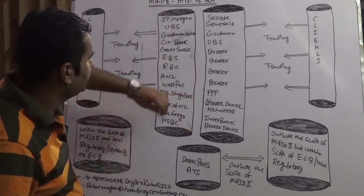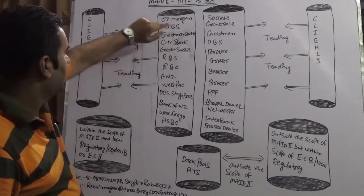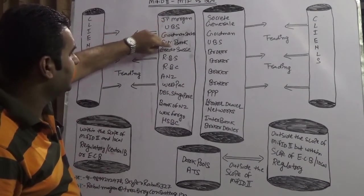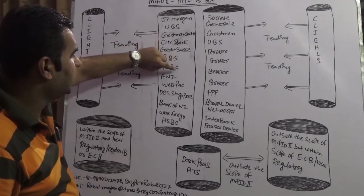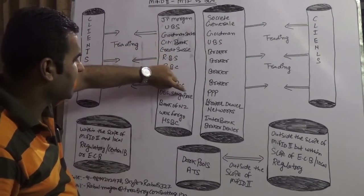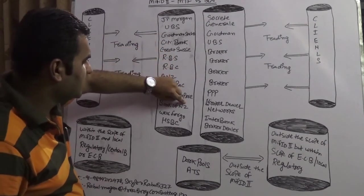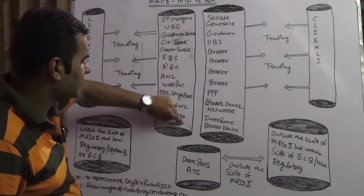This box is the multilateral trading facility in which we have kept the name of big banks like JP Morgan, UBS, Goldman Sachs, Citibank, Credit Suisse, Royal Bank of Scotland, Royal Bank of Canada, ANZ, West Bank, DB Singapore, Bank of New Zealand, Wells Fargo and HSBC.